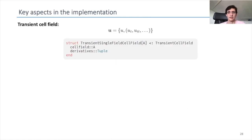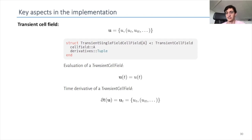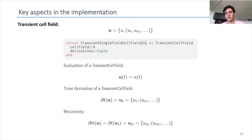Now, what are the key aspects of the implementation of the transient part in Gridapp? One is the transient cell field concept. A transient cell field is a struct that has a single cell field and derivatives as a tuple. When we want to evaluate this transient cell field at a given time we just evaluate the inner cell field. When we want to take derivatives we return another transient cell field that has the first derivative as its cell field and the consecutive time derivatives for higher order. This allows a kind of recursivity, so the second-order time derivative is the same as the first-order derivative of the first derivative with respect to time.